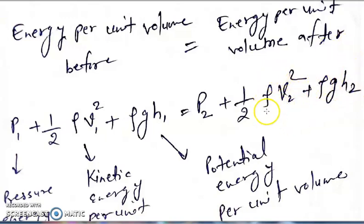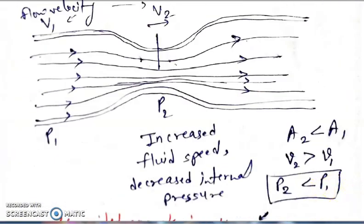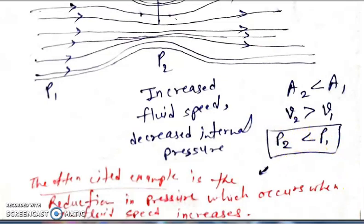Since velocity is in a square term, it will increase the total value in square. For making both sides equal, P2 pressure will be decreased. By taking any experimental value, we can prove that if at the obstruction point velocity increases, then pressure decreases. The result from Bernoulli's equation is: reduction in pressure occurs when the fluid speed increases. This is the key result to keep in mind when studying flow measurement.